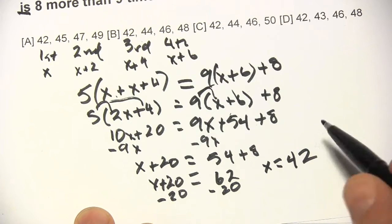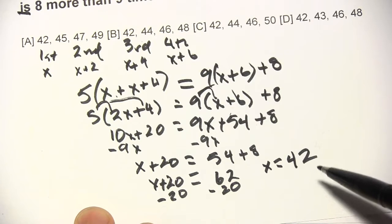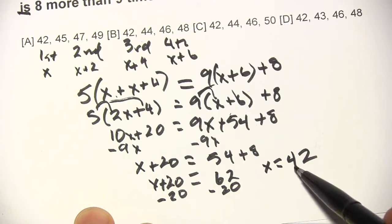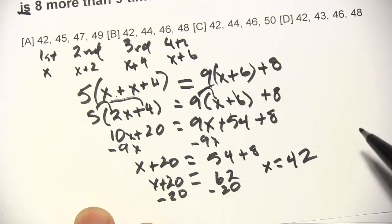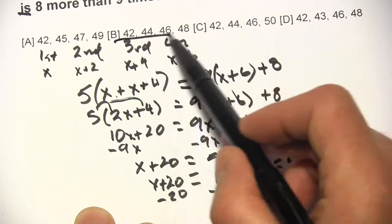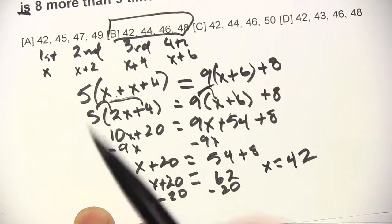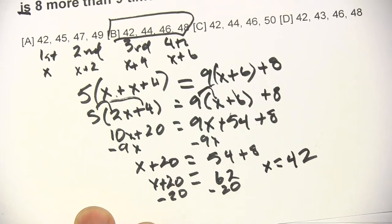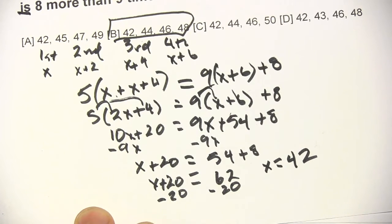So our consecutive even integers are going to be 42, 44, 46, 48 — just as shown here. That's a little bit of work with consecutive odd and consecutive even integers.